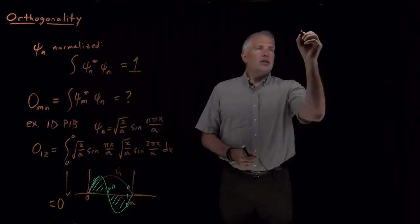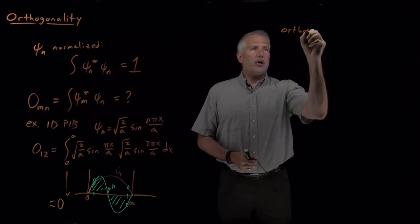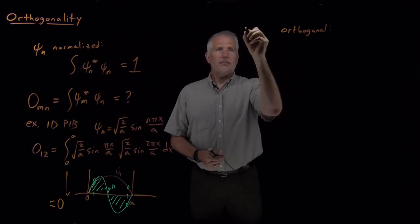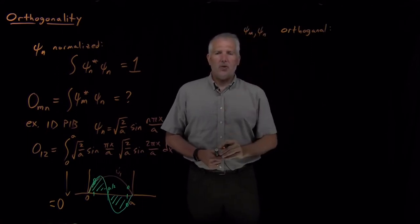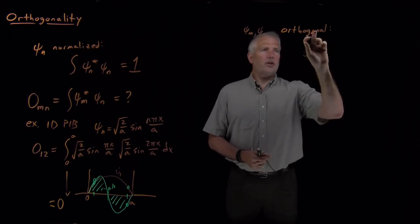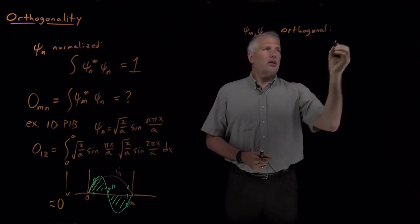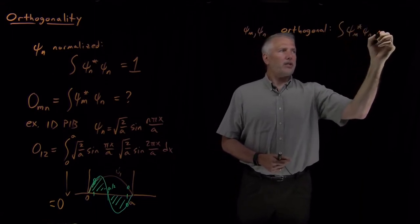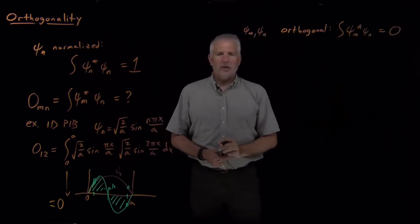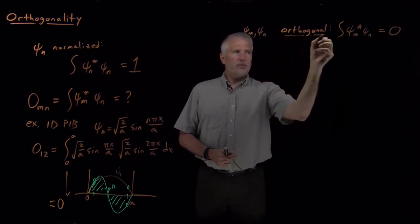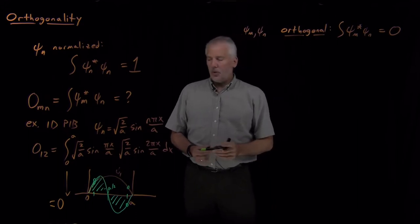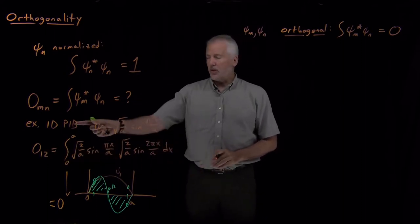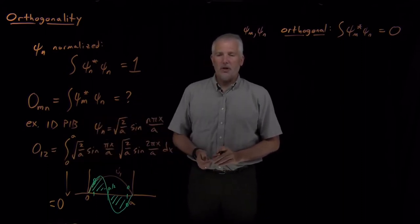So that's a different property. Two wave functions — we say that they're orthogonal to one another. This is the definition: when the product of the two wave functions, one of them complex conjugated, is integrated and gives us zero, those wave functions are orthogonal. So we've just seen that psi sub 1 and psi sub 2 for the one-dimensional particle in a box are orthogonal to one another.